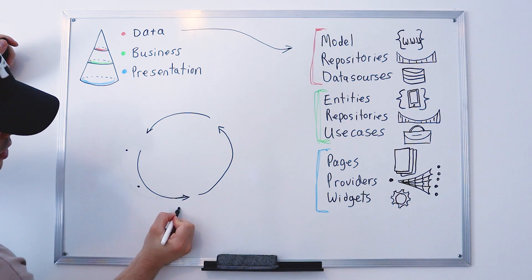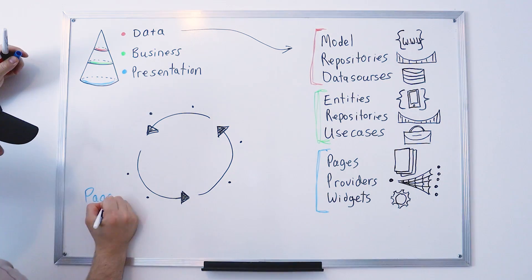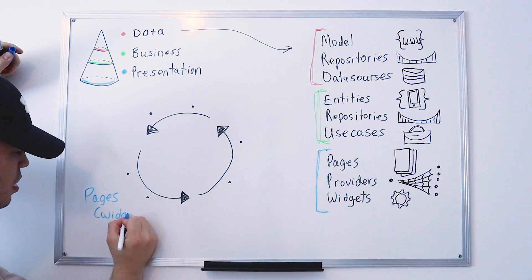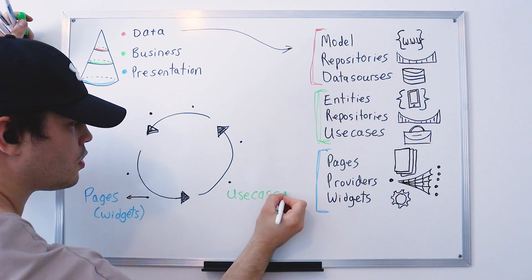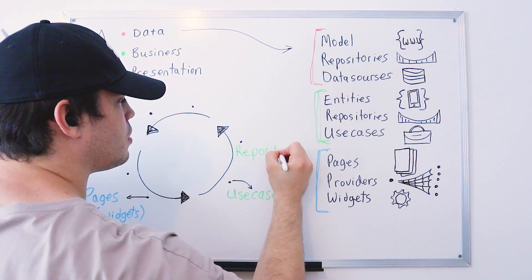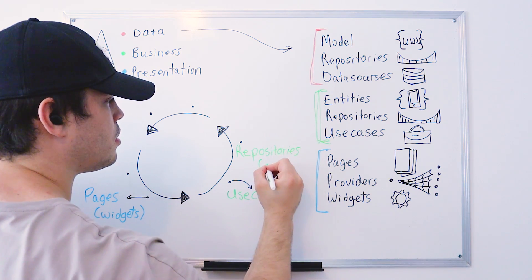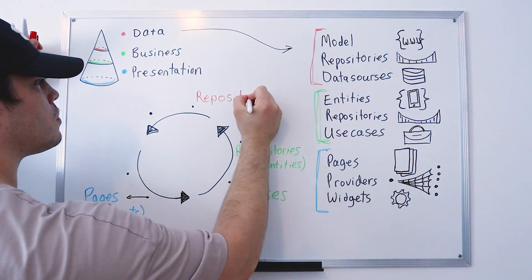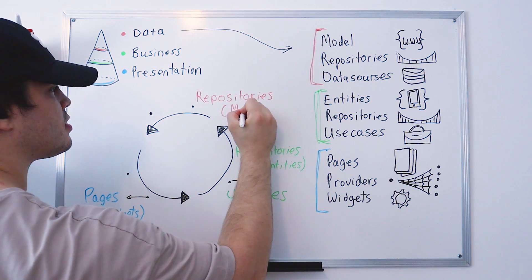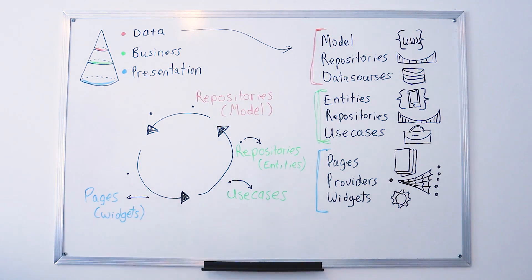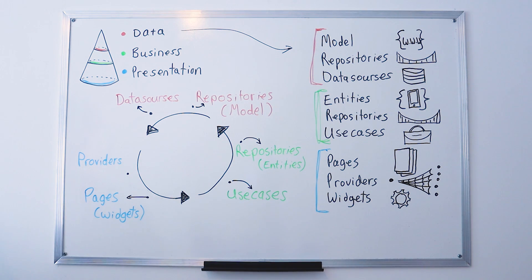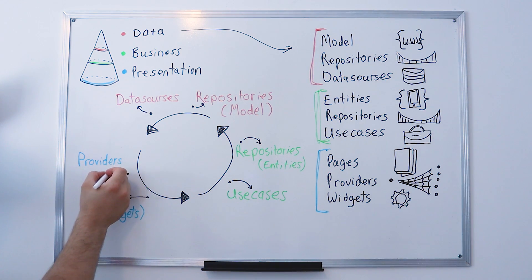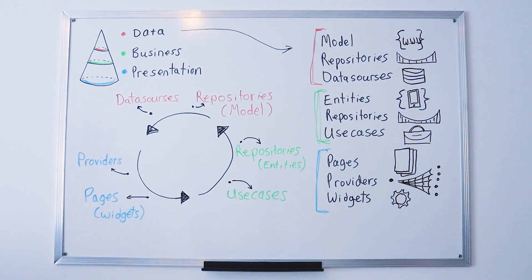Now let's look at how everything is linked together in a never-ending cycle. It starts with the pages, which contain all the widgets. When you click a button, you trigger a use case. The use case uses the repository inside the business layer with entities, creating a bridge to the data layer. The data layer repository uses models and the data sources. The data sources retrieve all the data, put it into the provider, which manages the data, updates the screen, and refreshes the pages and widgets.